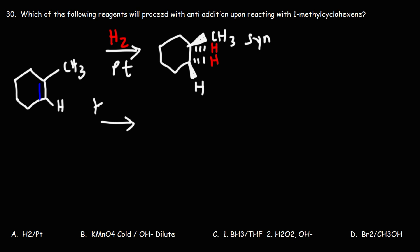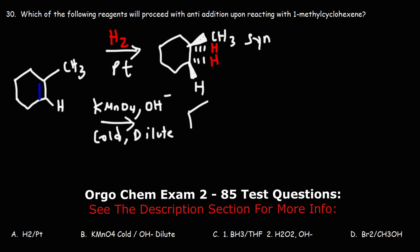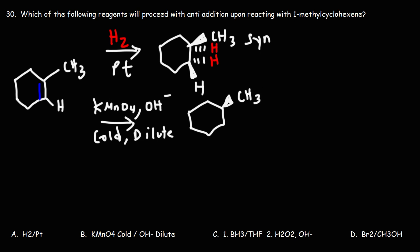Now for answer choice B, we have potassium permanganate under basic conditions. So we have hydroxide. The temperature is low. The reaction condition is cold. And the concentration is dilute. So this is a mild oxidation reaction. What we're going to get is dihydroxylation. We're going to get a diol, but with syn-addition. And we can also get the enantiomer as well. But this is a syn-addition reaction.